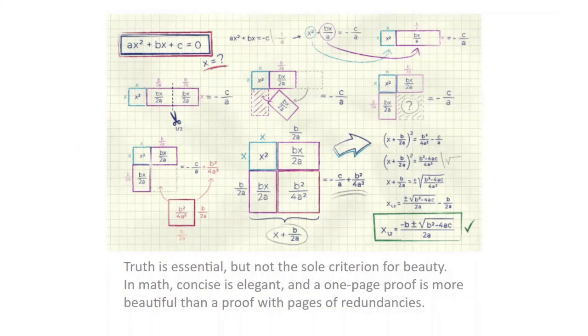Truth is essential, but not the sole criterion for beauty. In math, concise is elegant, and a one-page proof is more beautiful than a proof with pages of redundancy.